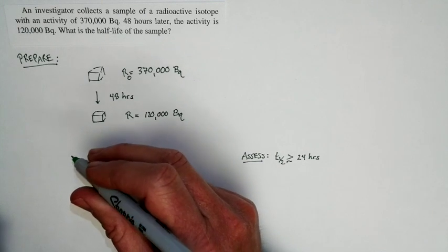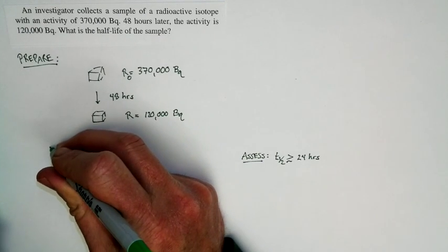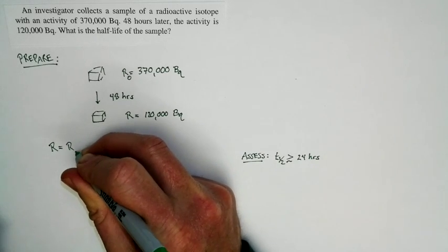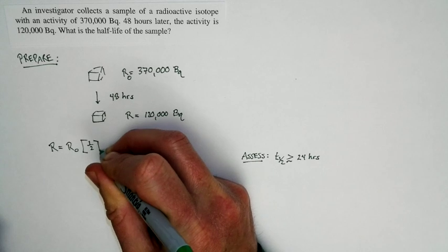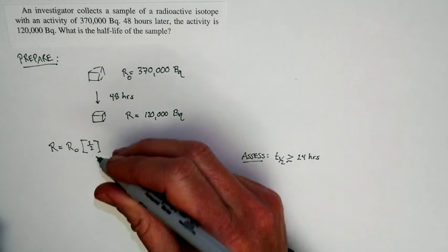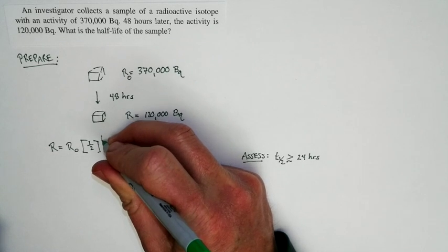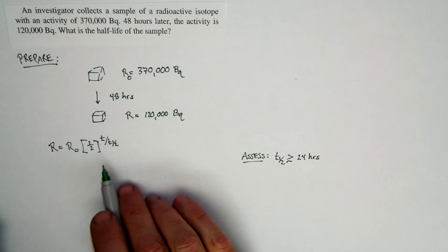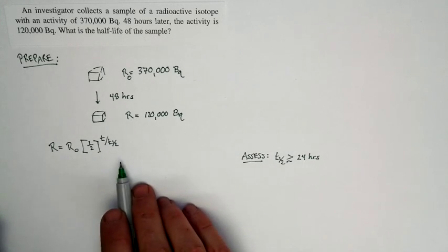If you have half as many atoms, you have half as great an activity. So it's no surprise that the basic relationships for activity mirror those for the number of atoms. The activity at some time t is equal to an initial activity times one-half to the t over t₁/₂. That's our basic relationship for the decay of the activity.